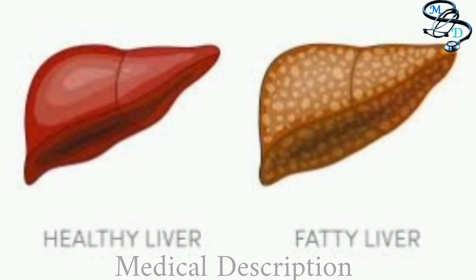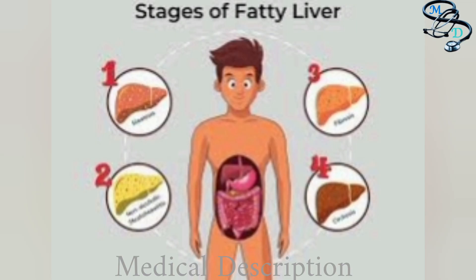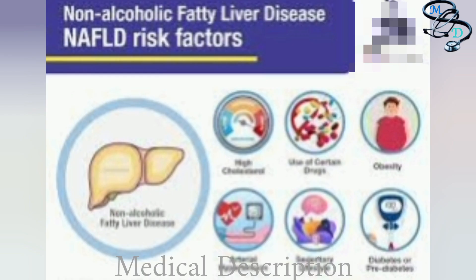NAFL typically does not progress to cause liver damage or complications, though it can cause pain from enlargement of the liver. NASH is the form of NAFLD in which you have inflammation and liver damage in addition to fat in your liver. The inflammation and damage of NASH can cause fibrosis or scarring of the liver, and NASH may lead to cirrhosis. Experts are not sure why some people with NAFLD develop NASH while others develop NAFL.